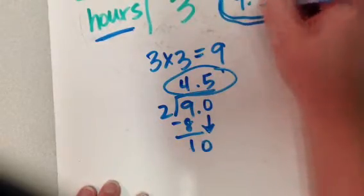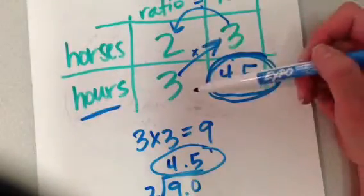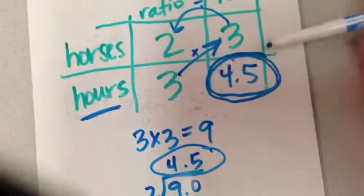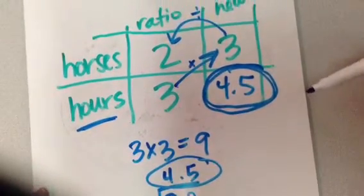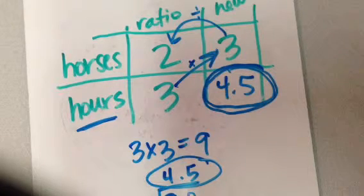So if he can shoe 2 horses in 3 hours, it should take him 4 and a half hours to shoe 3 horses. We're going to expand on this in the next video.